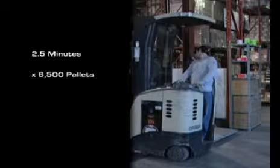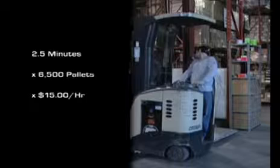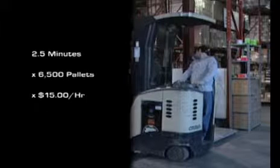It takes an average of two and a half minutes for the operator to leave the forklift once or even twice to manually attach the film, start the stretch wrap process, and then cut the film once the pallet is wrapped. The rest is simple math. Two and a half minutes multiplied by 6,500 pallet loads times an average of $15 per hour labor cost adds up to over $4,000.